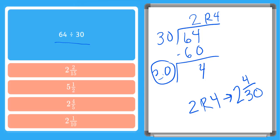But I can simplify this fraction, right? They both are divisible by 2. So if I divide each of these by 2, I'll have a 2 on top and a 15 on the bottom. So my answer comes to 2 and 2 15ths, which looks like this top answer here.